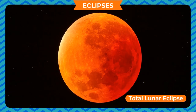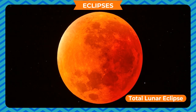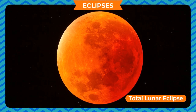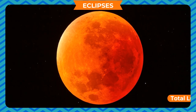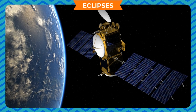When the moon is partially in shadow it is called a partial lunar eclipse, and when it is fully in shadow it is called a total lunar eclipse. A lunar eclipse can last for a few hours, and at least two lunar eclipses happen every year.